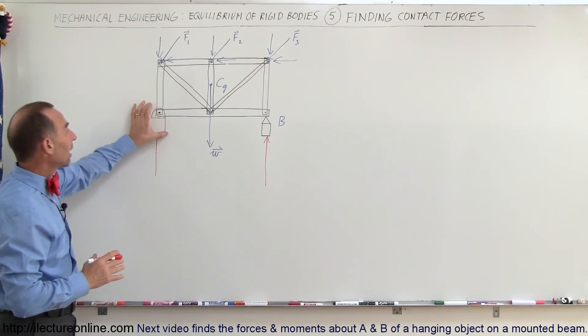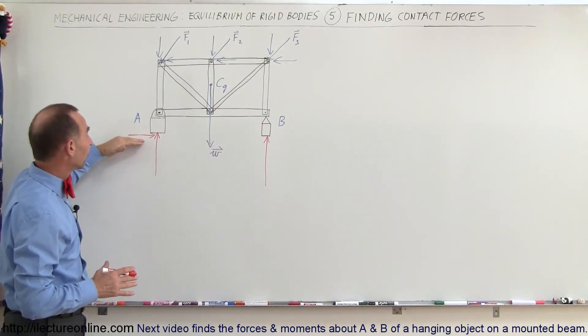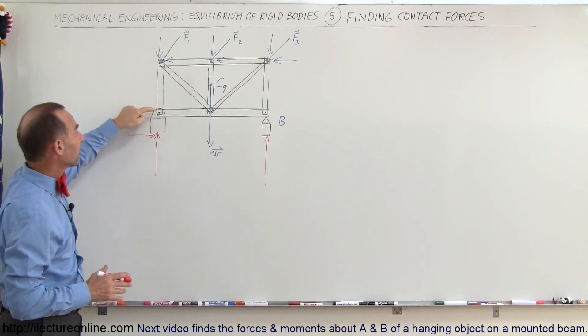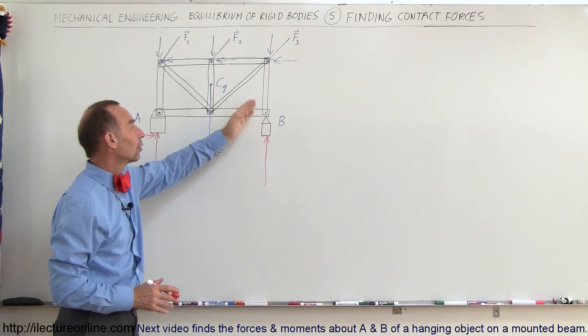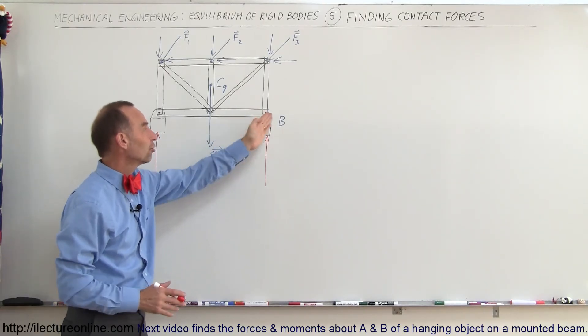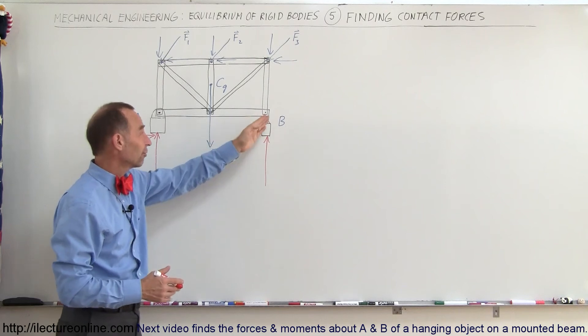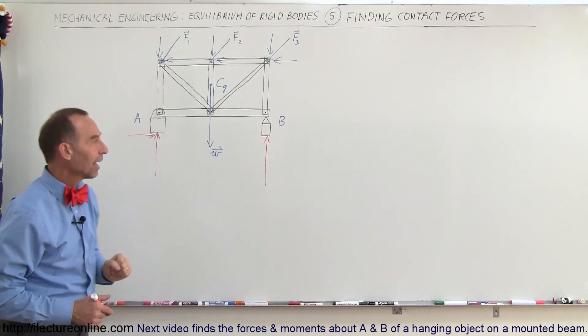So here you can see that because of the type of supports that we have, we can then determine the type of contact forces that can exist. In this particular case, because it's attached, we'll have a vertical and a horizontal force. In this case, because it only supports the weight and will not offer any resistance to any motion of the beam, because of thermal expansion left or right, there'll be no horizontal forces. So this will be the only reactionary force at point B.